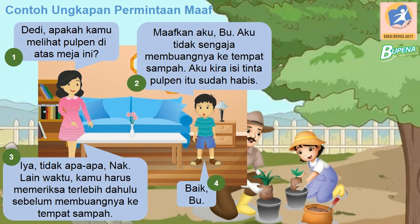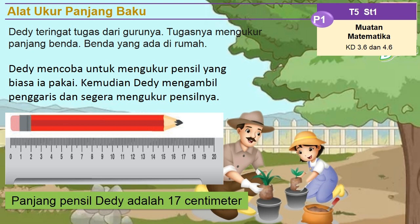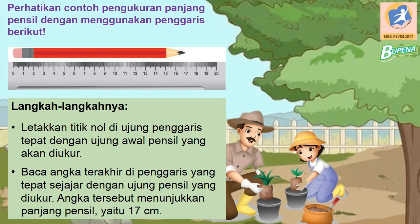Sekarang kita akan belajar tentang alat ukur panjang baku. Kalian perhatikan ya. Dedy teringat tugas dari gurunya — tugasnya mengukur panjang benda yang ada di rumah. Ada bermacam-macam benda yang bisa diukur: ada meja, buku, jendela, ataupun pintu. Dedy mencoba untuk mengukur pensil yang biasanya ia pakai, kemudian Dedy mengambil penggaris dan segera mengukurnya.